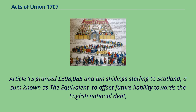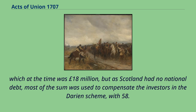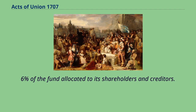Article 15 granted £398,085 and 10 shillings sterling to Scotland, a sum known as the equivalent, to offset future liability towards the English national debt, which at the time was £18 million. But as Scotland had no national debt, most of the sum was used to compensate the investors in the Darien Scheme, with 58.6% of the fund allocated to its shareholders and creditors.